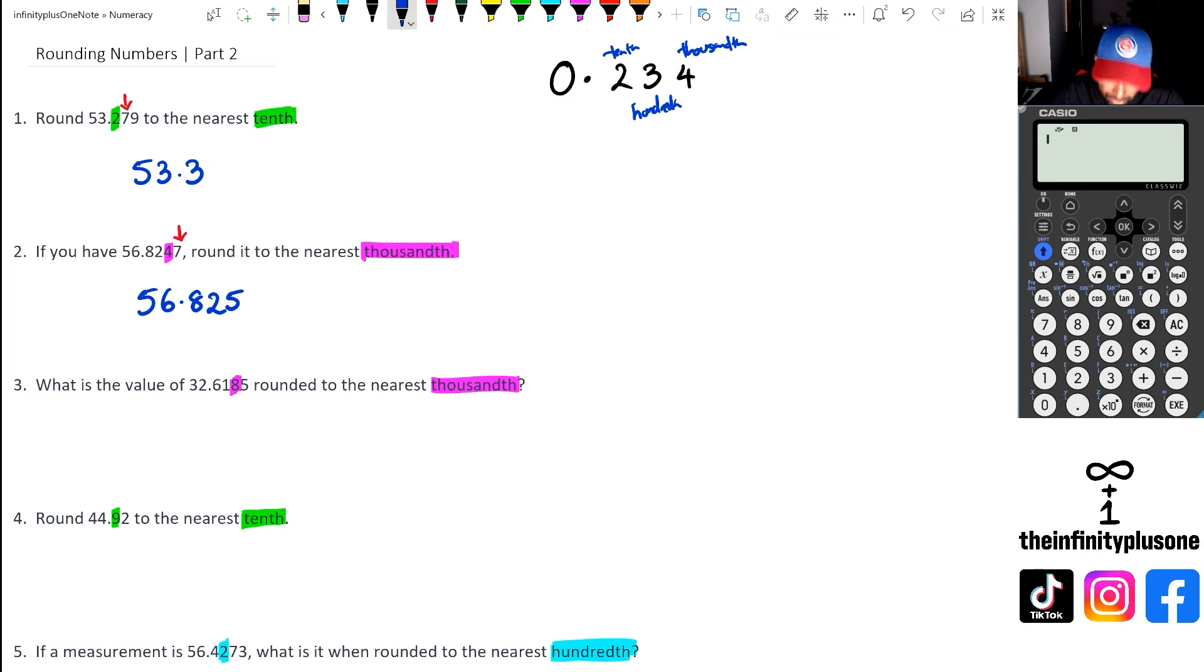If you look at question three, we've got 32.6185. We're going to look at the value after the highlighted number. In this case, it's five. And remember, when it's five and above, we actually round it up. So in this case, it will be rounding up to 32.619.